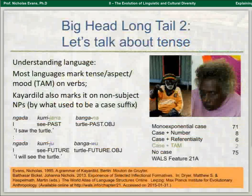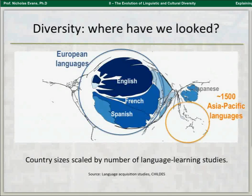If we go looking for diversity, where has the science of linguistics actually looked? This is a representation of the world's geography, taking as a proxy the number of language acquisition studies for which we have information. We've blown up the countries from which most languages studied originate — the usual culprits: English, French, Spanish, Japanese, Hebrew, and a couple of others. This vast world of Asia-Pacific languages gets very little representation at all.